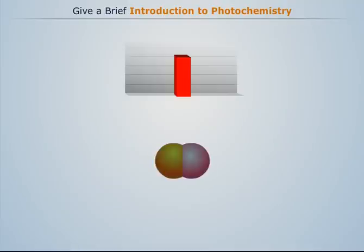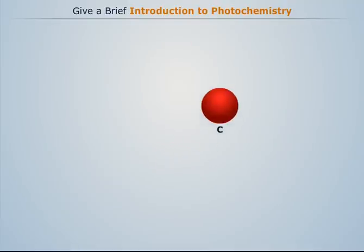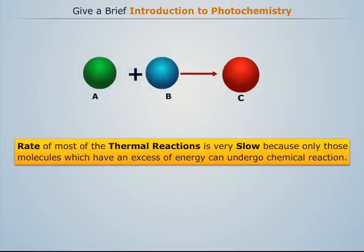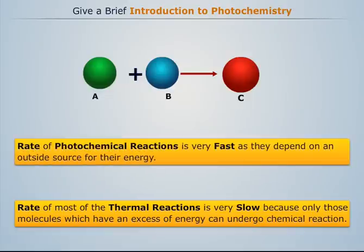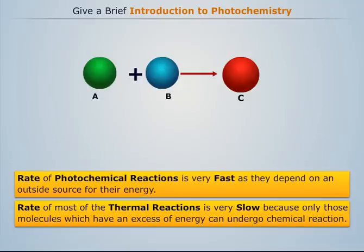Generally, the rate of most thermal reactions is very slow because only those molecules which have an excess of energy can undergo chemical reaction. On the other hand, the rate of photochemical reactions is very fast as they depend on an outside source for their energy.